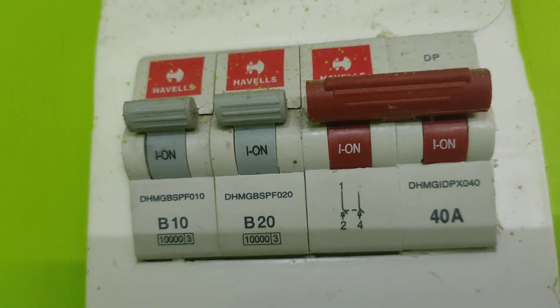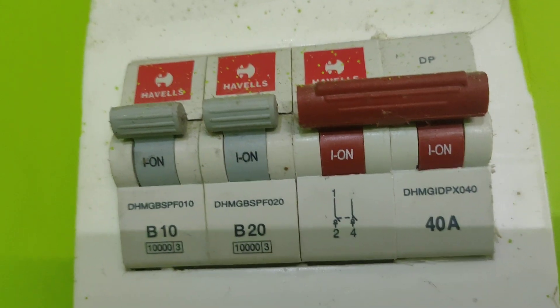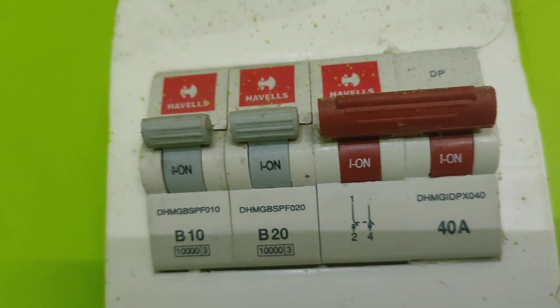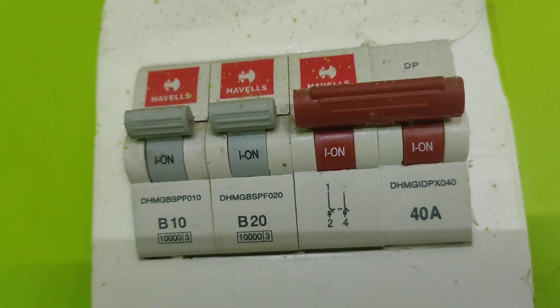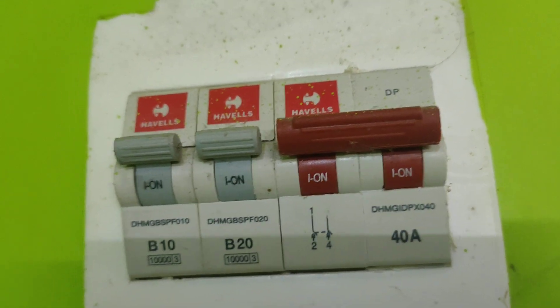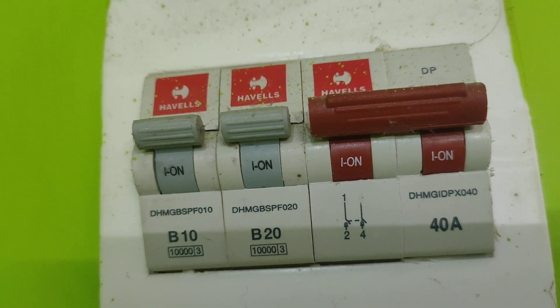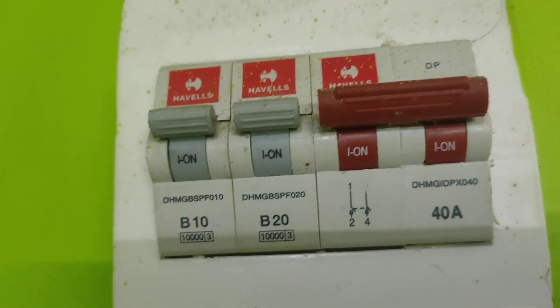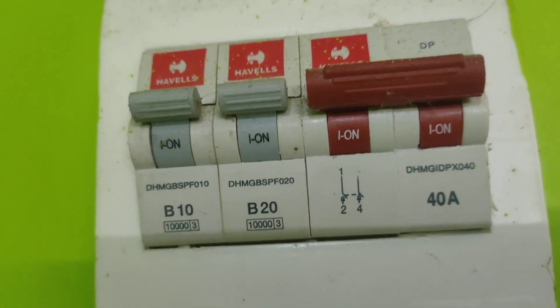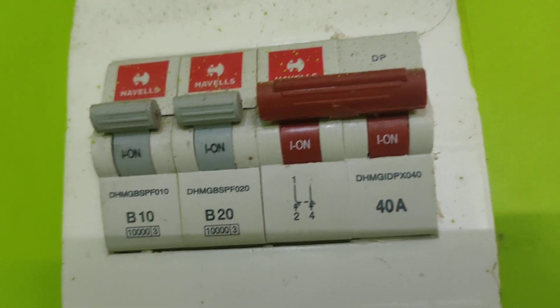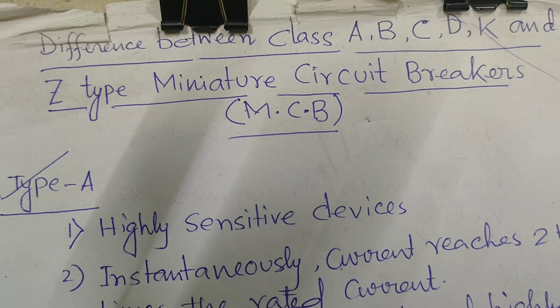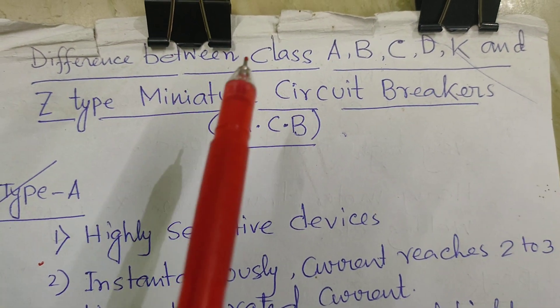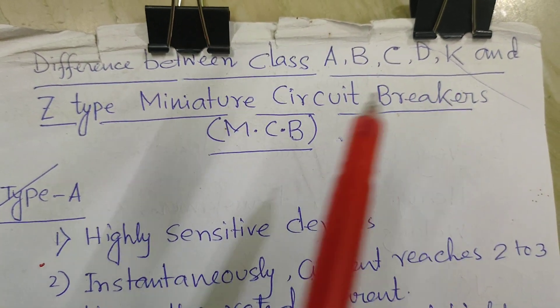Today the topic is about MCB. This is the MCB you are seeing, the B10 and B20. Here, different types of MCBs are present. We are discussing about the different types of MCBs and their benefits, advantages and disadvantages. Let's start about the discussions of different types of MCBs.